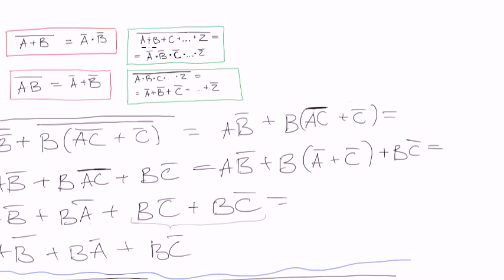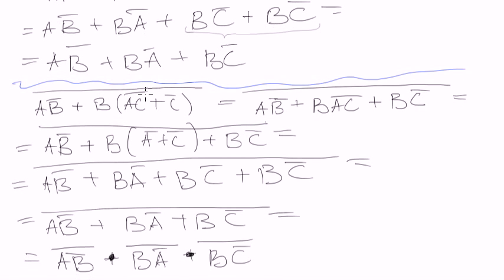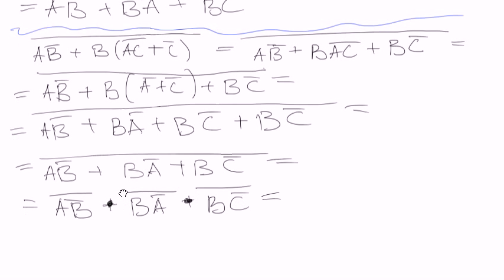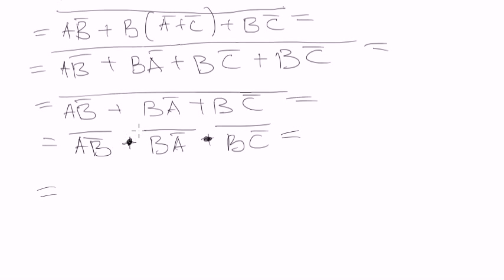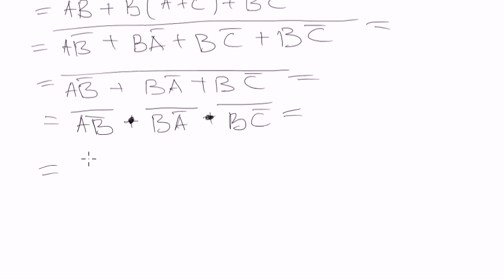And now we can apply De Morgan's theorem several more times - for this one separately, for this one separately, and for this one separately, because we got three of them. So we will get, in the bracket, A negated plus B negated, negated - and we can just cancel the double negation.